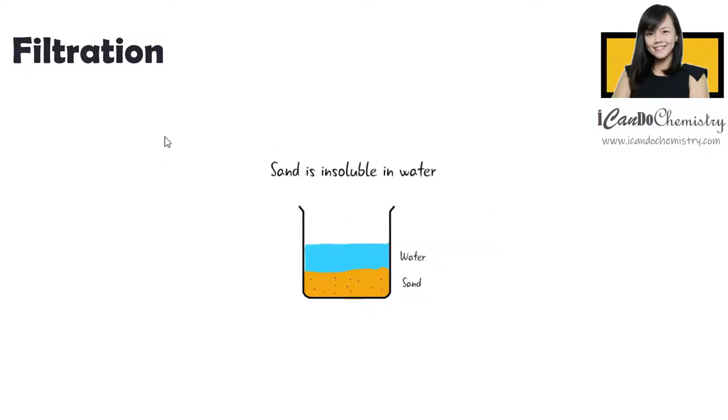Now let's say we have a mixture of sand and water. If sand is added into water, sand does not dissolve at all, just like rice. Hence, sand is insoluble in water.